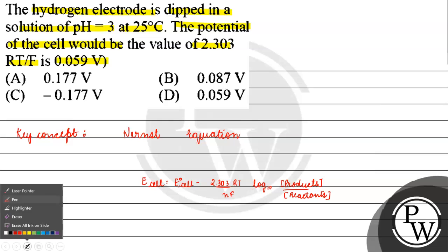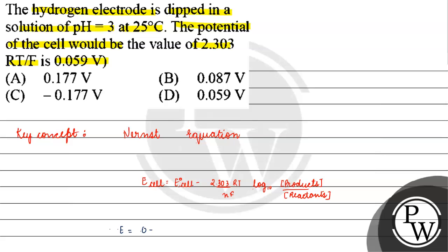If we talk about hydrogen electrode, what is it? E naught equals 0.0 minus 2.303RT by F value, how much is it? 0.059V. By N, number of electrons involved, log base 10, concentration of products by concentration of reactants.